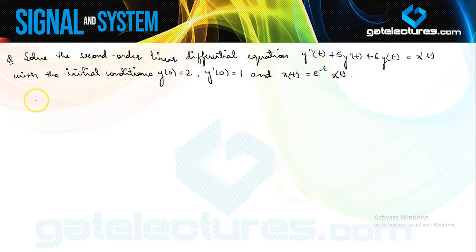They have given us a second order linear differential equation and the initial conditions, and they are asking you to calculate the output — basically to solve the equation. If you just see, they have given us the initial conditions.